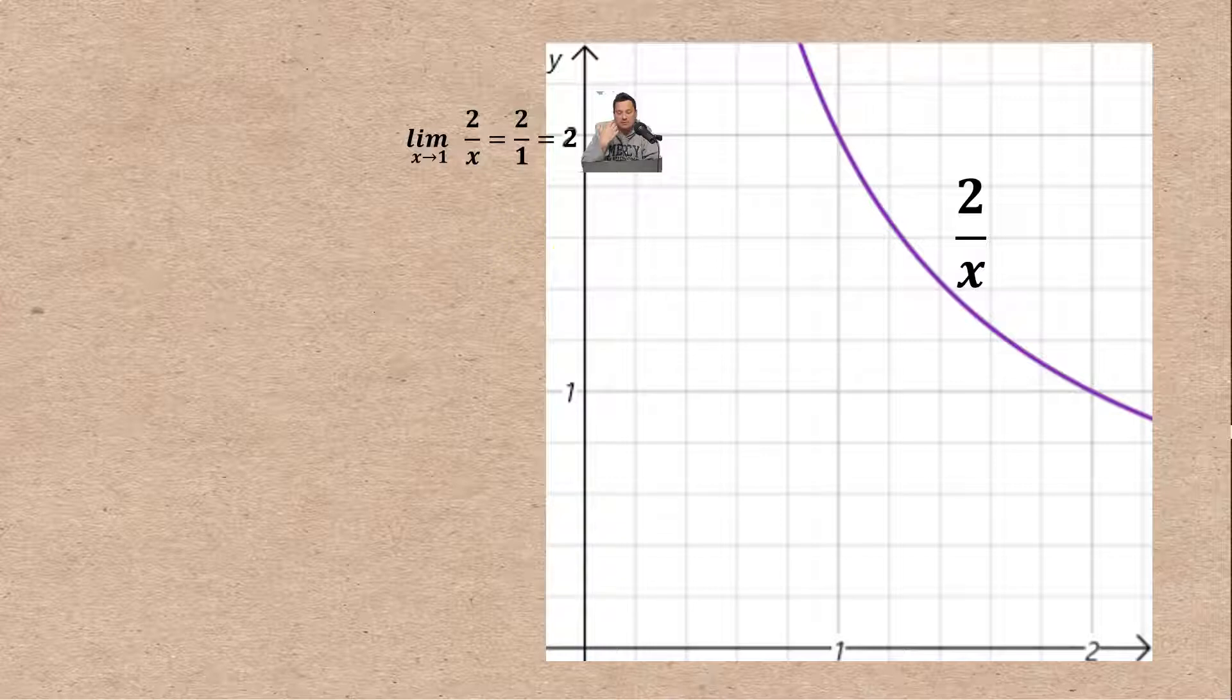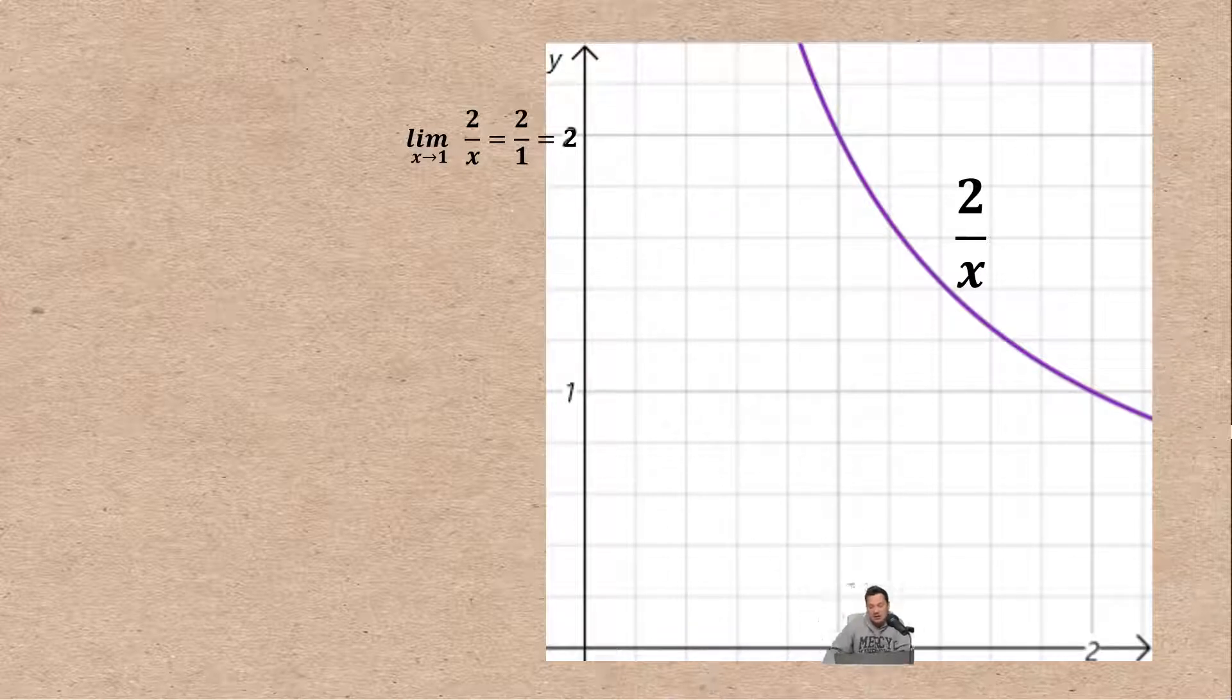Here's a common question. How close should the inputs be to the value 1 so that the outputs are within a certain range of the limit which is 2? In other words, how should we select values around x equals 1 so that the outputs are within a certain range close to 2? That's our goal.